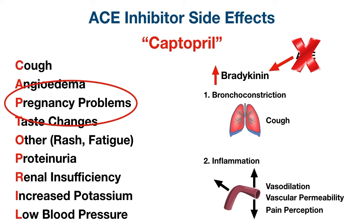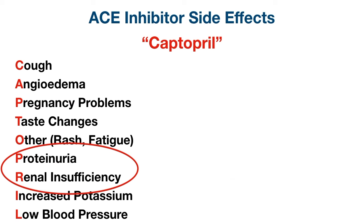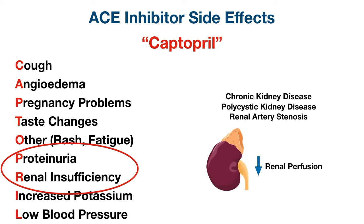ACE inhibitors are also teratogenic and should be avoided during pregnancy. They can also cause changes in taste, development of a rash, or fatigue. Proteinuria and renal insufficiency refer to the acute kidney injury that can occur, especially when first starting an ACE inhibitor or in patients with underlying kidney disease such as chronic kidney disease, polycystic kidney disease, or renal artery stenosis — in these cases ACE inhibitors could worsen renal perfusion, so renal function should be monitored closely.